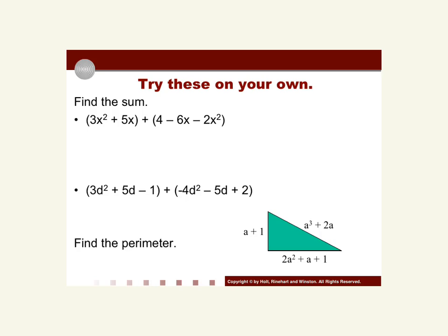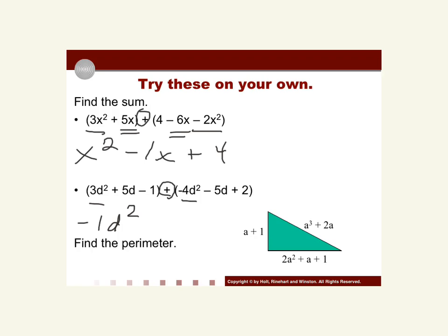Hopefully you have your answers now. For the first problem, we're adding like terms: 3x² + (-2x²) = x². Then 5x + (-6x) = -1x. There is no other constant term, so that's just +4. Final answer: x² - x + 4. For the second problem: 3d² + (-4d²) = -1d². Then 5d + (-5d) = 0d, so there's no d term at all. And -1 + 2 = +1. So the final answer is -d² + 1.